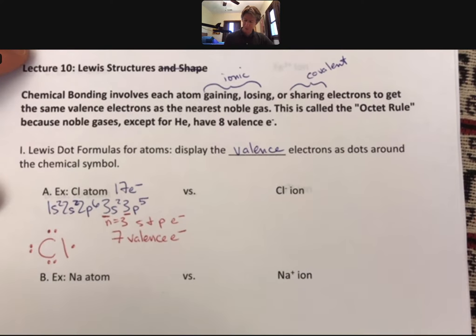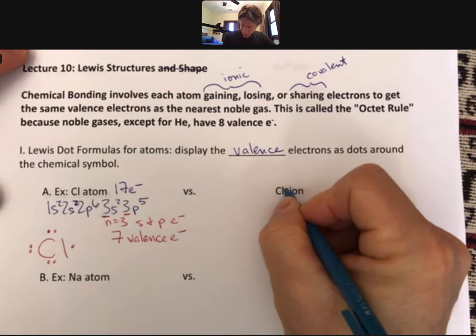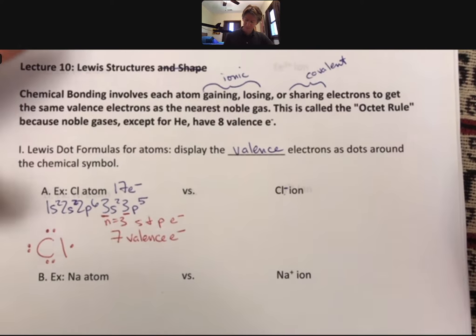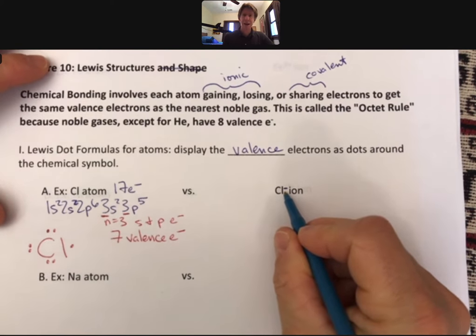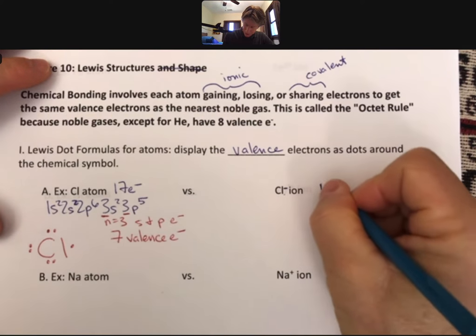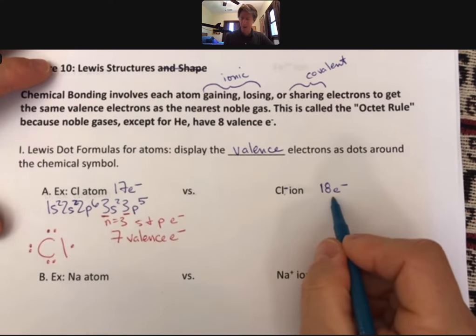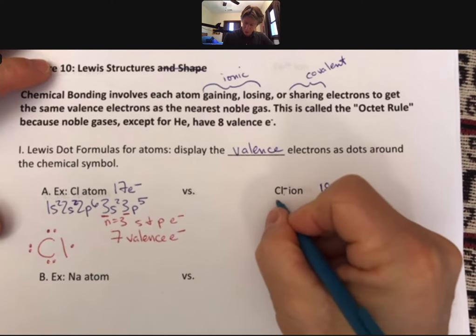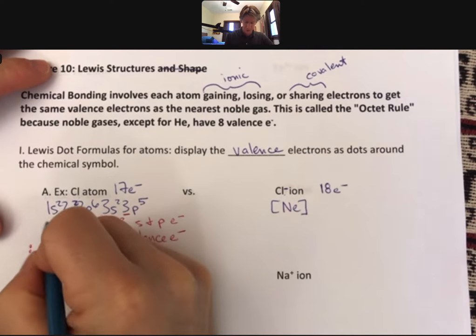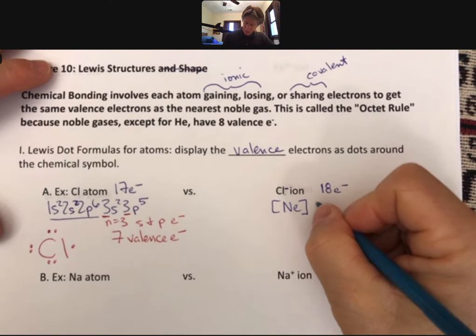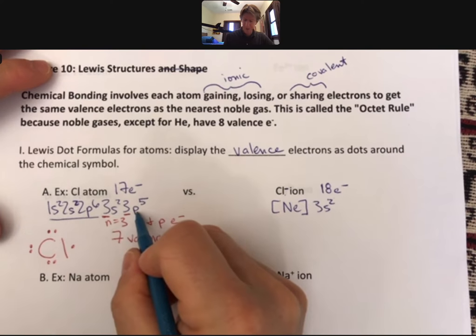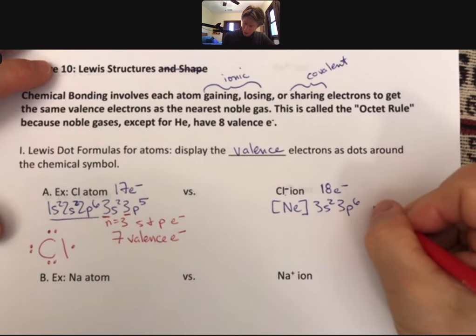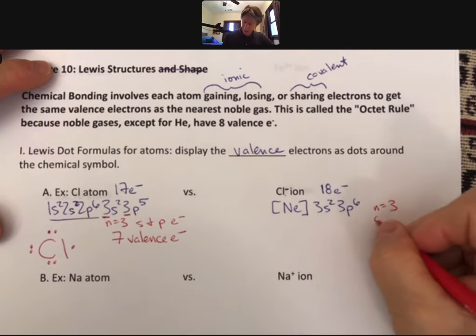Now, let's do something similar for the chloride ion, Cl minus. Chloride is a typical ion that chlorine forms. Since it's a minus, and electrons are negative, that means there are actually 18 electrons, one more electron. This time I'll do it with a noble gas core. Neon will be the first 10 electrons there. Then it will be 3s2, 3p6. For n equals 3, there will be 8 valence electrons.